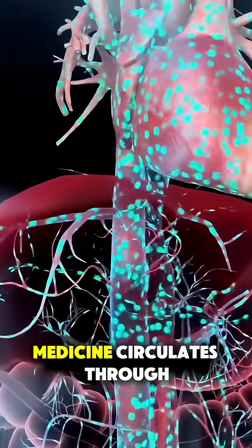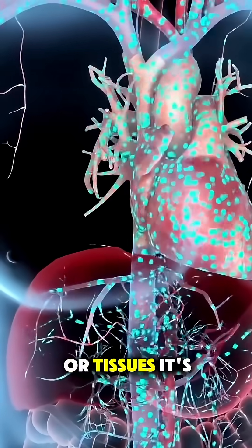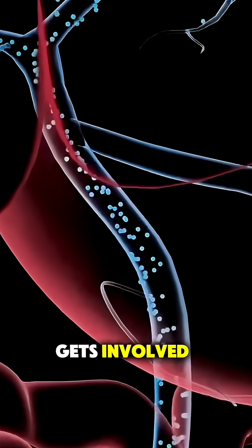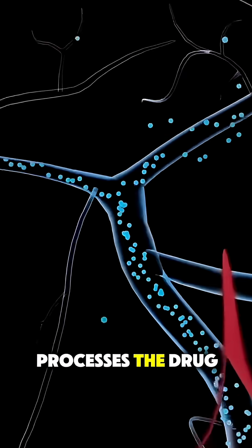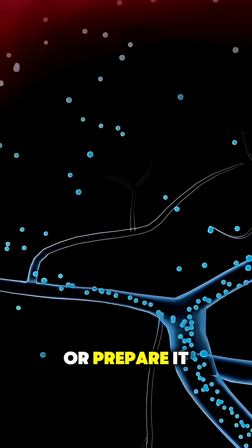From there, the medicine circulates through your body, reaching the specific organs or tissues it's designed to affect. Your liver also gets involved. It filters and processes the drug, sometimes changing its form to help it work better or prepare it for elimination.